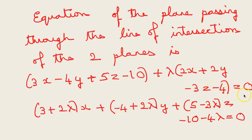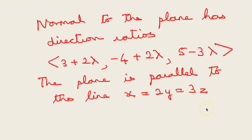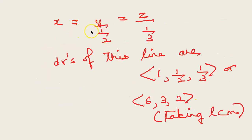Taking the coefficients together: (3 + 2λ)x + (−4 + 2λ)y + (5 − 3λ)z − (10 + 4λ) = 0. The normal to the plane has direction ratios (3 + 2λ, −4 + 2λ, 5 − 3λ). The plane is parallel to the line x = 2y = 3z. We rewrite the line as x/1 = y/(1/2) = z/(1/3), so the direction ratios are 1, 1/2, 1/3. Taking the LCM, we get direction ratios 6, 3, 2.